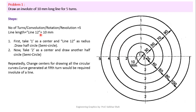The line length is given as line 1-2 equal to 10 mm. What we will do is first take point 1 as a center and draw a half circle or semicircle. Then take point 2 as a center and draw another half circle. Each semicircle gives 180 degrees, and after completing these two semicircles we finish one complete turn. We will repeat this procedure 5 times to get our involute of a line for 5 turns.